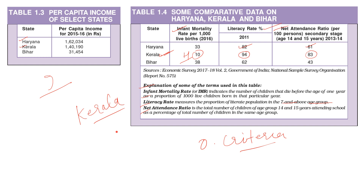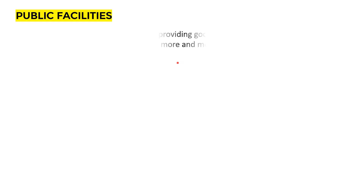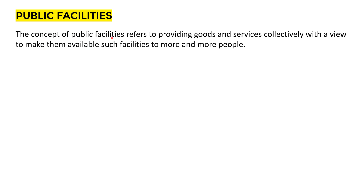These parameters are also required when we judge a region, state or country and the status of development of its people. The next topic is public facilities. The concept of public facilities refers to providing goods and services collectively with the view to make them available to more and more people. Generally public facilities are provided by government because government acts as a welfare government — it invests money for the sake of welfare of the people.